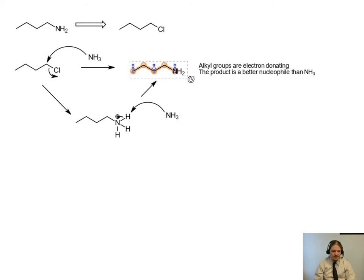So if one butanamine is a better nucleophile than ammonia, as it forms, it's going to compete with ammonia to react with one chlorobutane. And eventually we will get dibutyl amine.